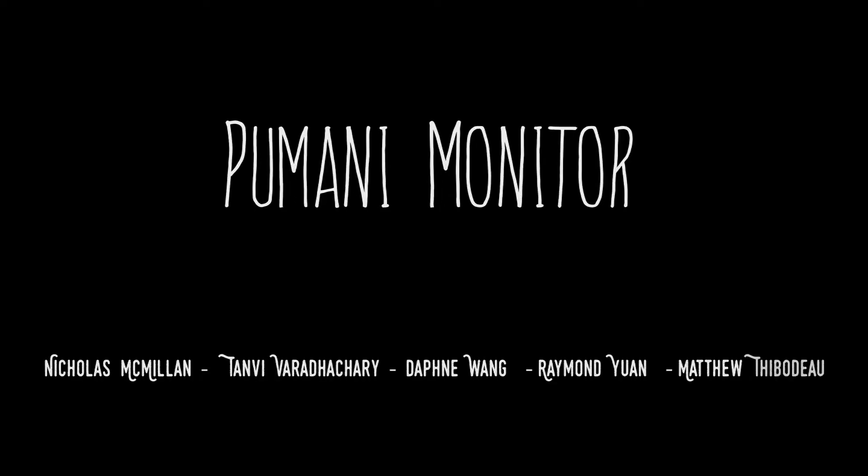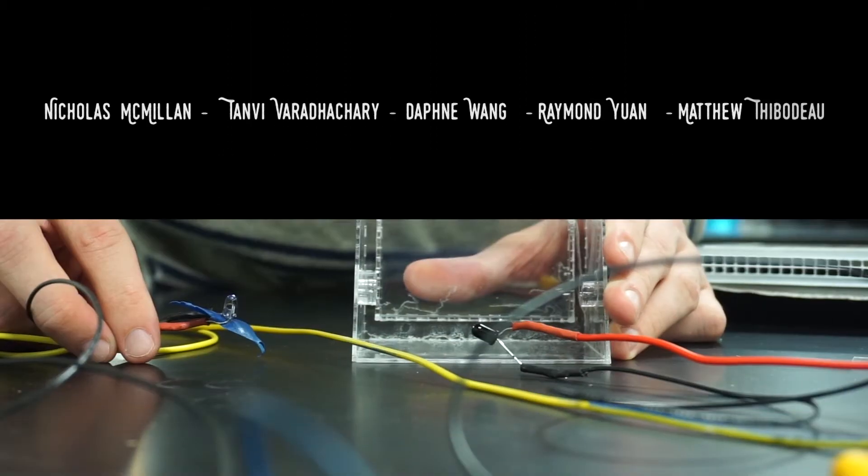The Pomani system monitor is composed of three parts: the LED photodiode component, the alarm, and the stand.